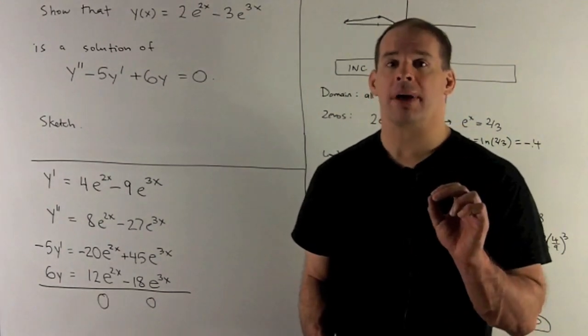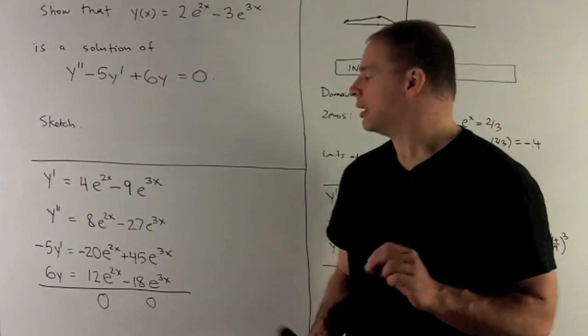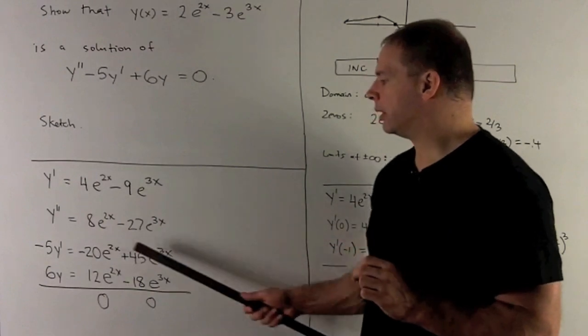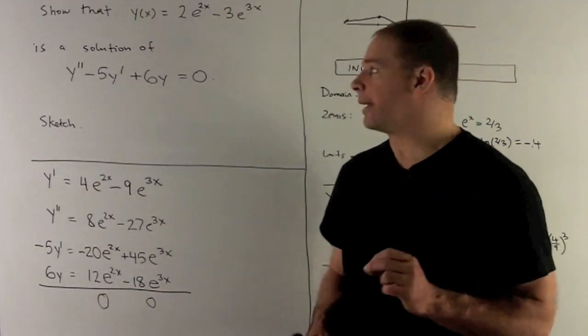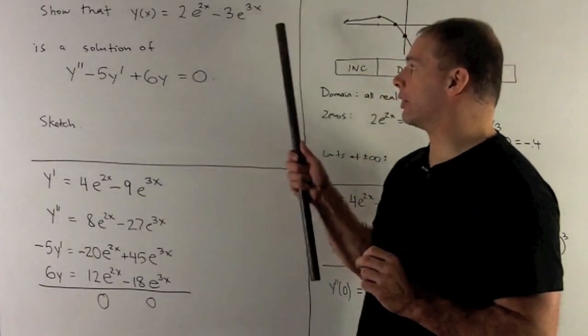Now, instead of y', I want -5y', so I'll multiply through. And then I want 6y, so we'll take y, multiply through by 6.